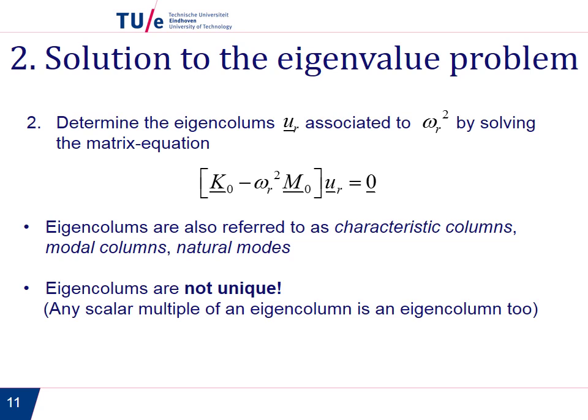The most important thing about them is that they are not unique. If we think about u_r as a vector, this means that solving this equation gives us the direction of these eigenvectors, but the magnitude is not determined. Another way to say that is if we multiply an eigencolumn with a scalar, that will be the same eigencolumn. It is an eigencolumn too.